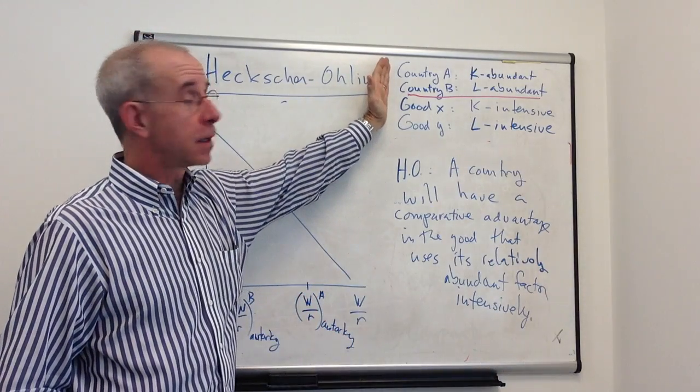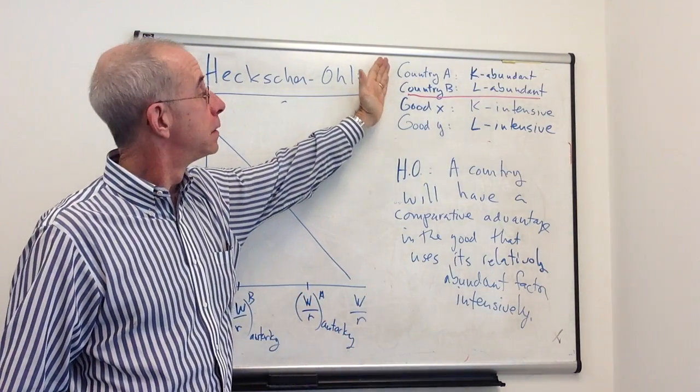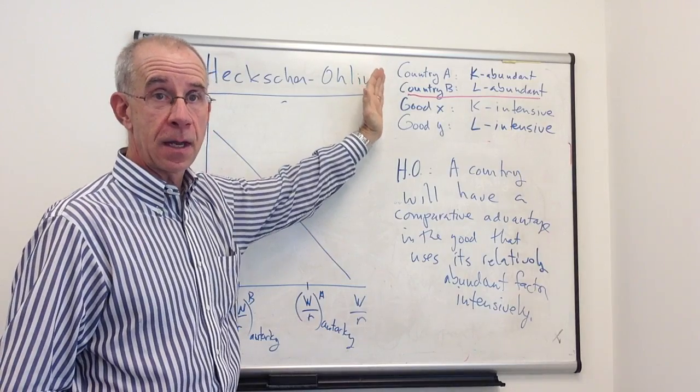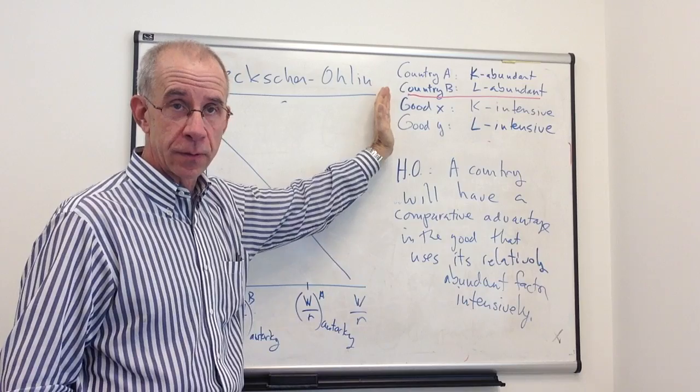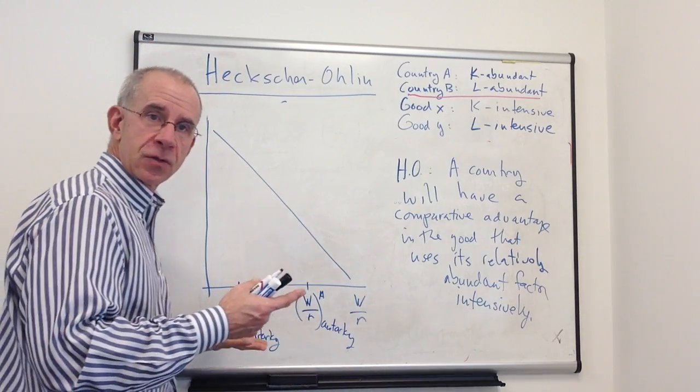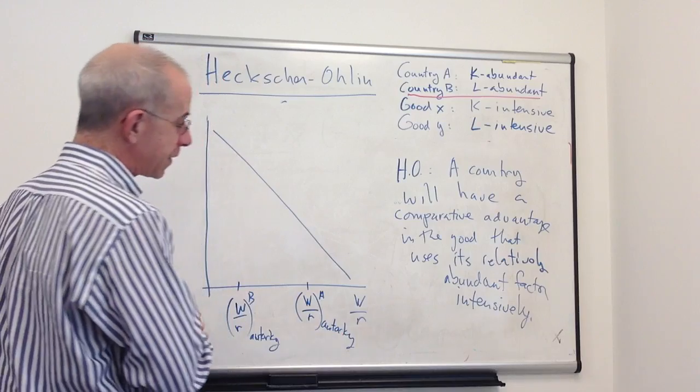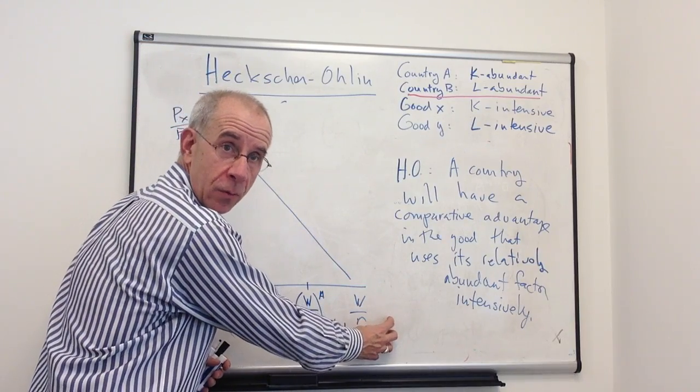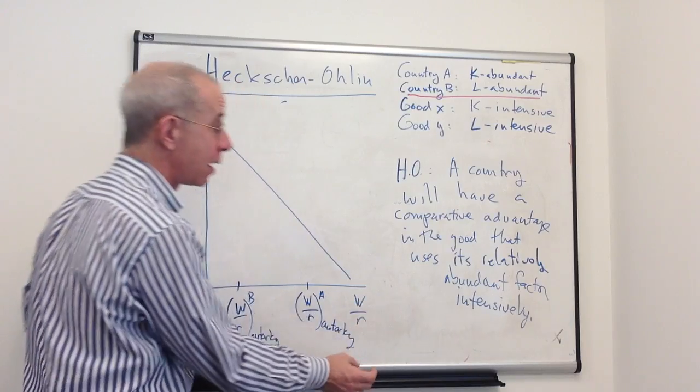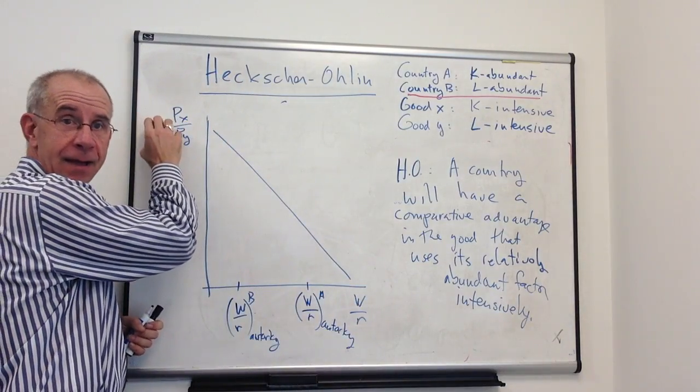We're going to be assuming that country A is capital abundant, country B is labor abundant, X is the capital intensive good, and Y is the labor intensive good. So we're going to redo this Heckscher-Ohlin framework from the standpoint of the wage-rental ratio, the input costs, and the factor prices.